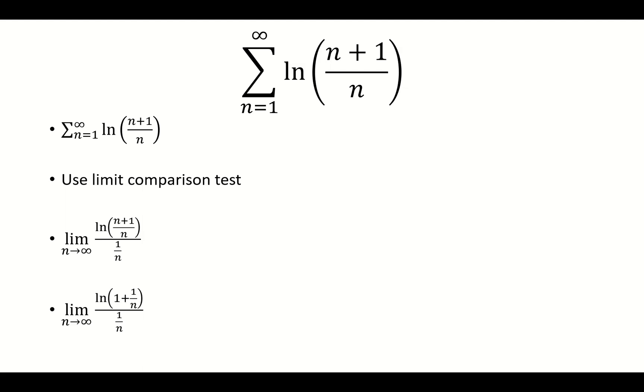I'm just going to break up the n plus 1 over n as 1 plus 1 over n, and now it's pretty obvious that's why I chose 1 over n.